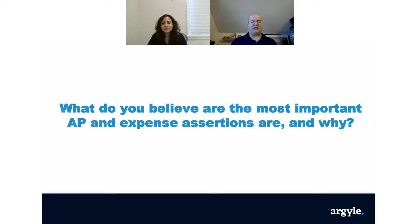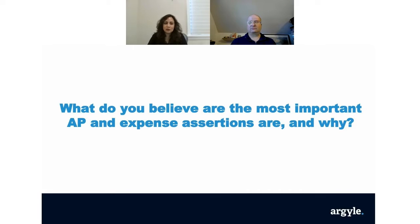What are the most important AP and expense assertions and why? The primary relevant AP and expense assertions are existence, completeness, and cutoff. Existence means you cannot record something if it did not occur — you have to make sure before recording that it actually did exist and that there were indeed services received. From a completeness perspective, did you receive $10 worth of services or $100 worth of services? Ensuring you're recording the right amounts and the right type of services is very important.